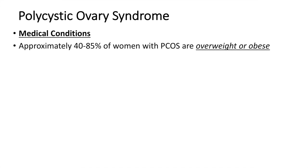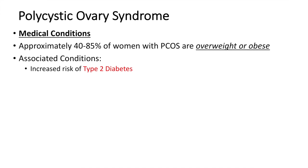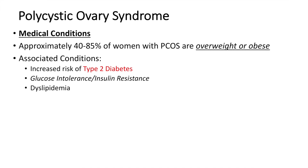So what are some of the medical conditions that are highly associated with polycystic ovary syndrome? Well, first off, approximately 40 to 85% of women with polycystic ovary syndrome are overweight or obese, so there's often a connection between BMI and polycystic ovary syndrome. This leads us to a list of conditions associated with overweight and obesity, such as type 2 diabetes — women with polycystic ovary syndrome typically have an increased risk of type 2 diabetes. This follows in line with glucose intolerance and insulin resistance. They're also often dyslipidemic, and because they're at a higher risk of being overweight or obese, they have a higher risk of obstructive sleep apnea.